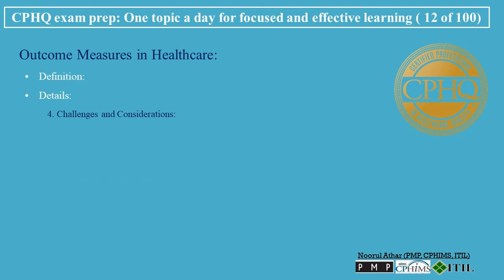Challenges and Considerations. Data Collection: accurately collecting and analyzing data for outcome measures can be challenging. Standardization: there may be variability in how different organizations define and measure outcomes. Patient Heterogeneity: individual differences in patient health status, comorbidities, and other factors can affect outcome measures. Ethical Concerns: ensuring that the focus on improving outcome measures does not inadvertently lead to the neglect of other important aspects of patient care.